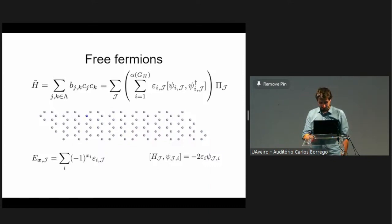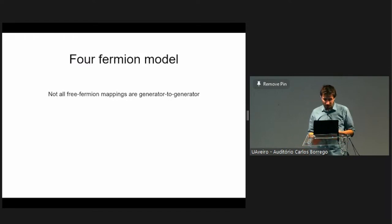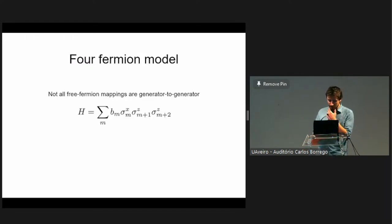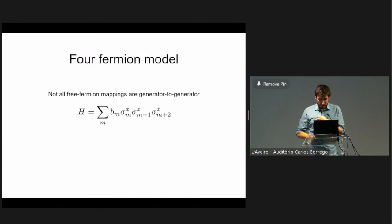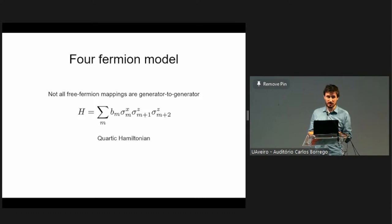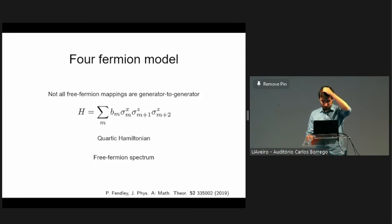Generally we think of spin-to-fermion mappings as generator-to-generator, but not all free fermionic mappings are. Paul Fendley's paper 'Free Fermions in Disguise' presented the four-fermion model: a one-dimensional lattice with Pauli strings XZZ on sets of three neighbors. If you map this to fermions using Jordan-Wigner or any generator-to-generator mapping, you get a quartic Hamiltonian — highly non-free-fermion — but it turns out it has a free fermionic spectrum regardless.